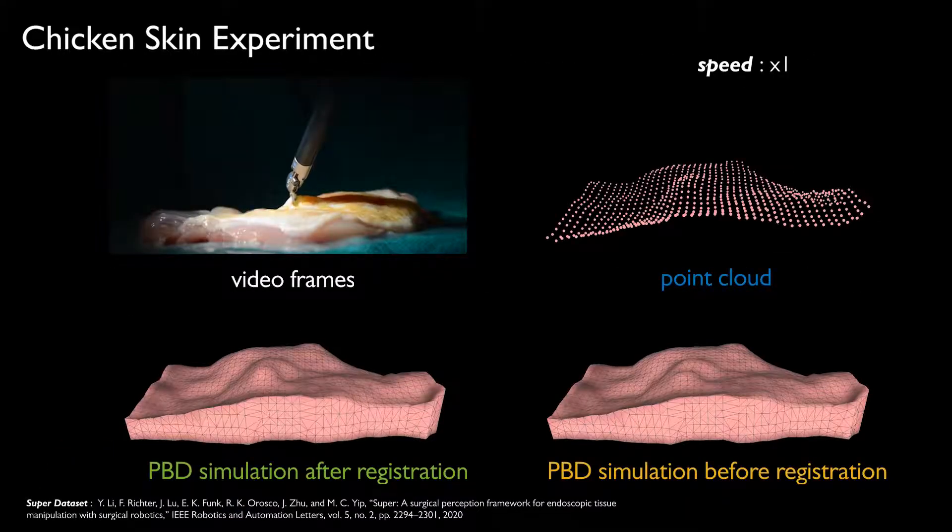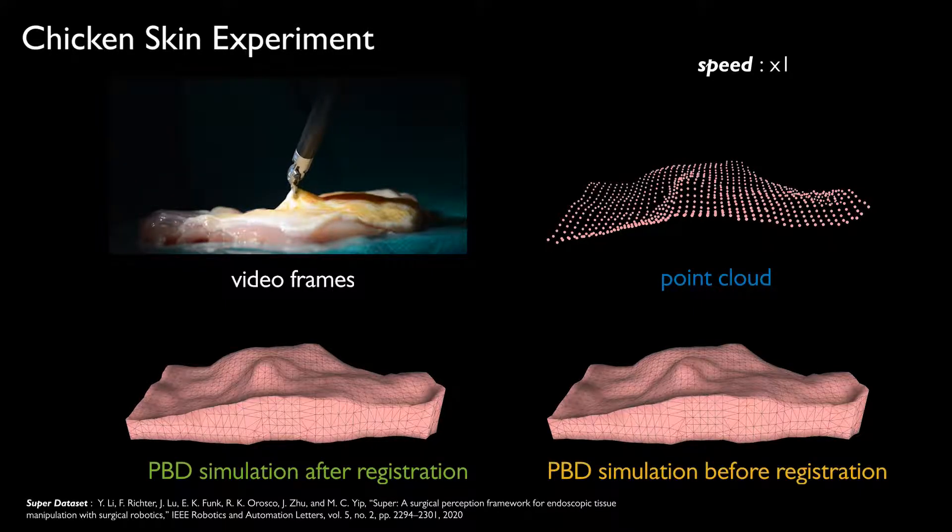In the first experiment, we use the super dataset which is performing the grasping of chicken skin.